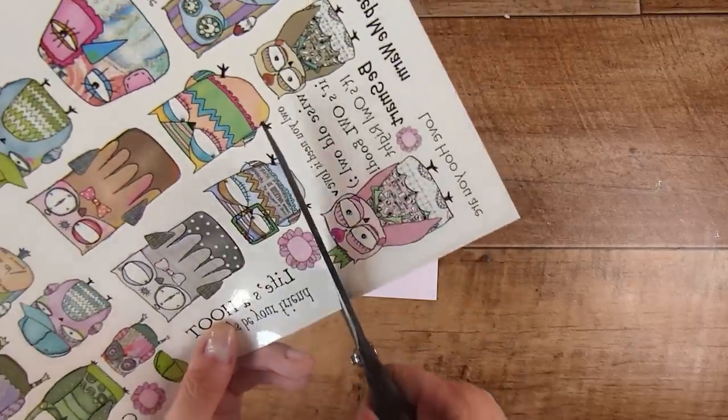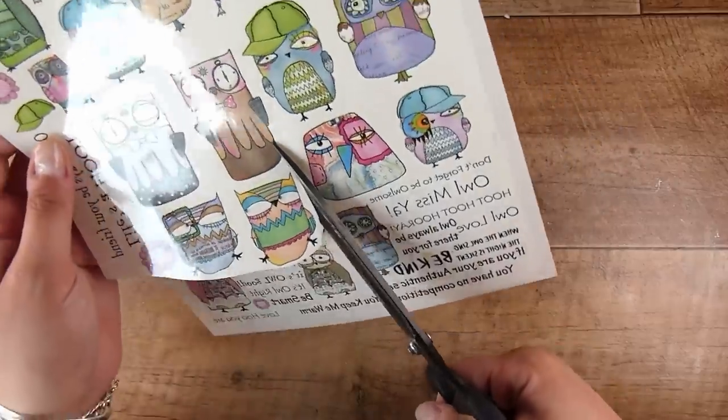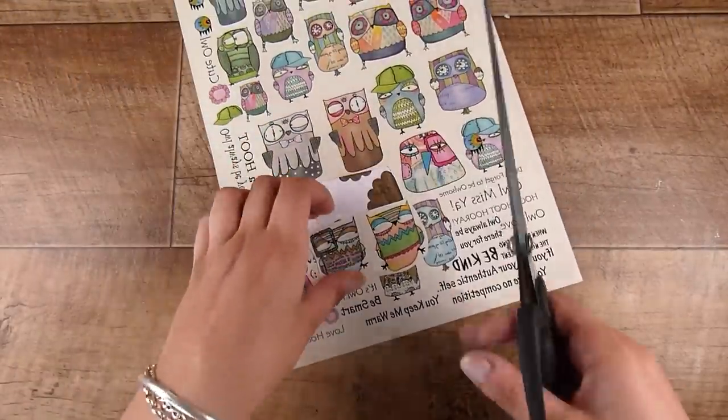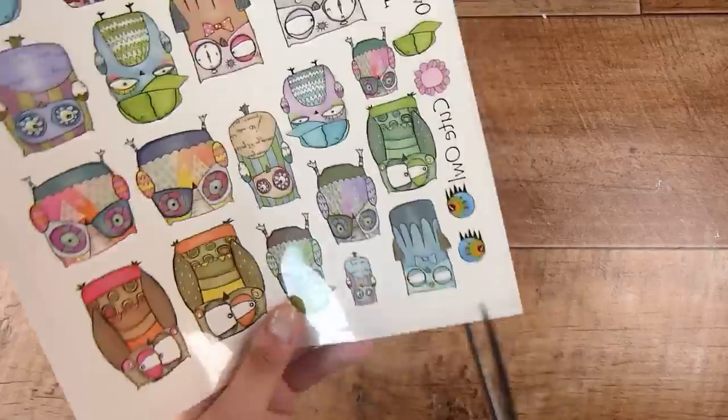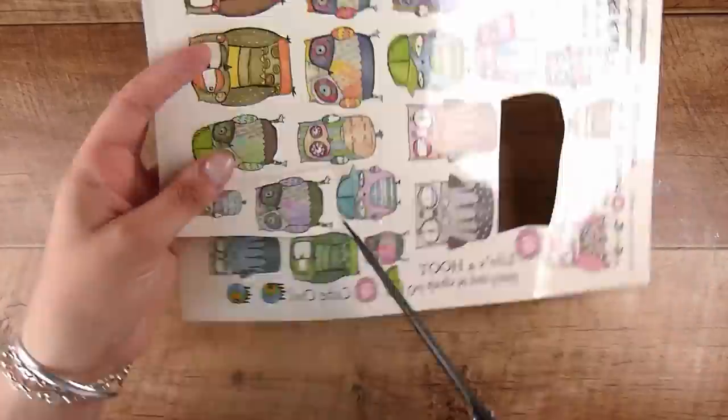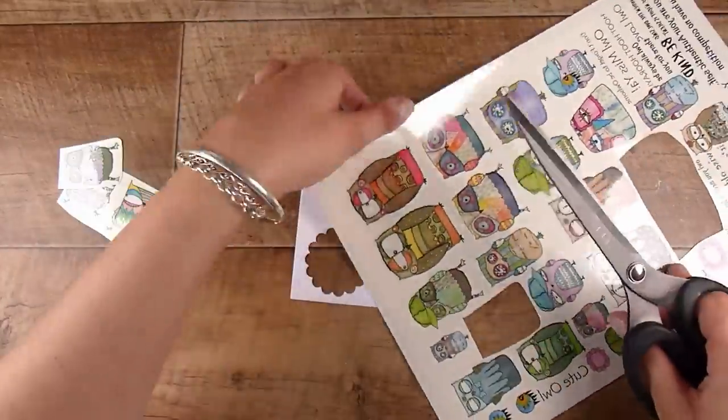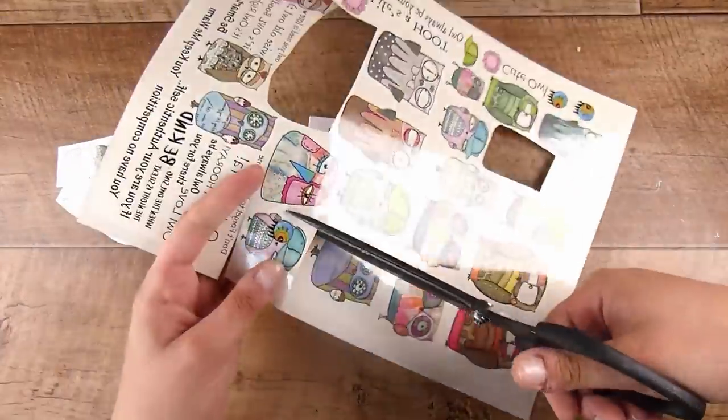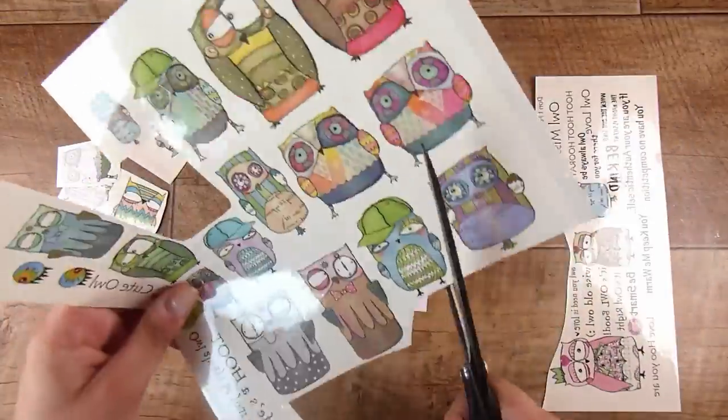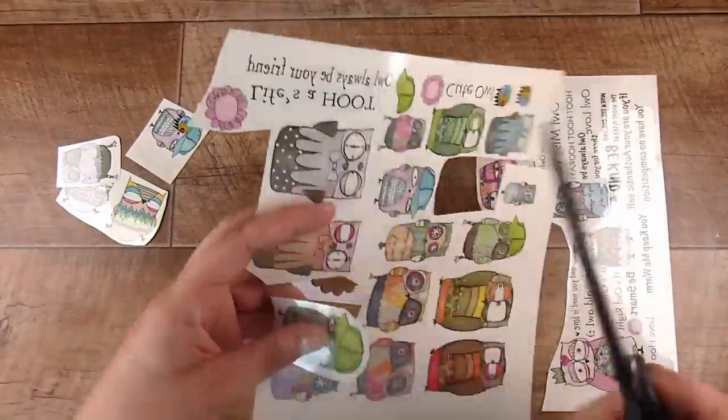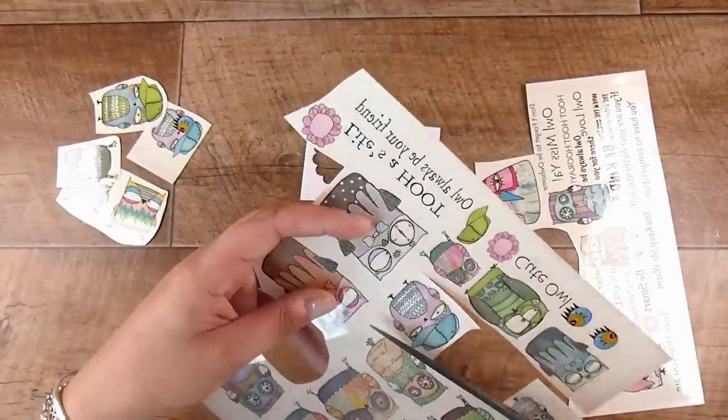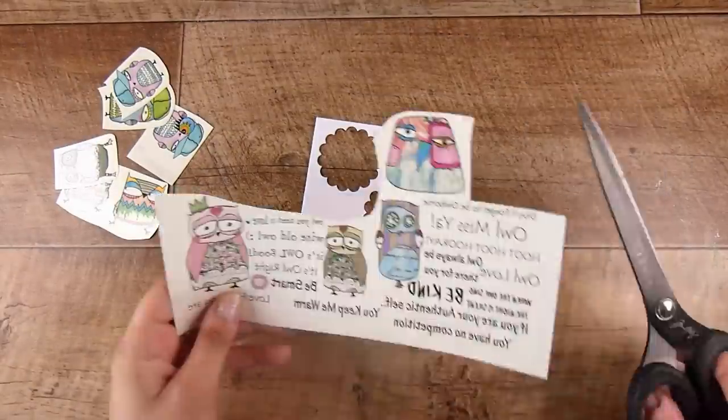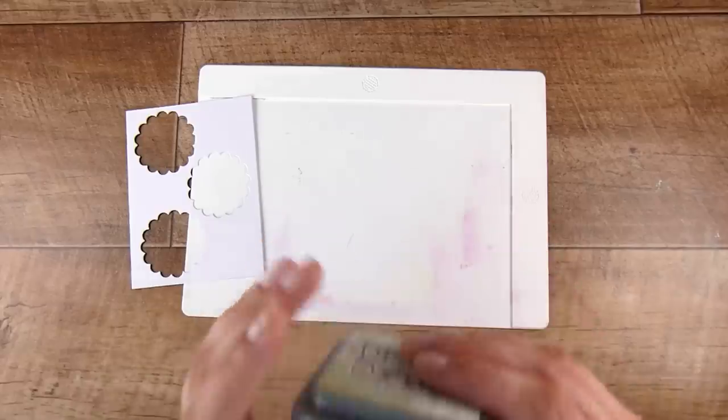I have definitely used lots of the Dress My Craft transfers before. They remind me of a temporary tattoo from growing up. You take off the plastic film, I leave it on all of these, I cut out the one that I need and leave on the plastic film, and that way I know everything is covered and I'm not going to accidentally take some of the transfer off.